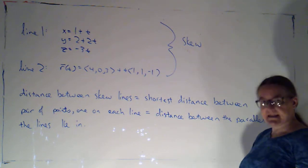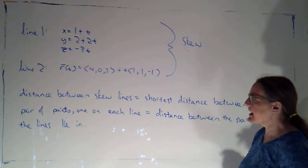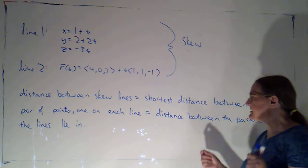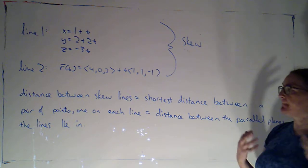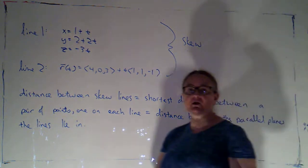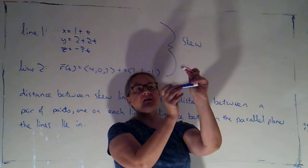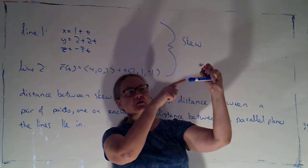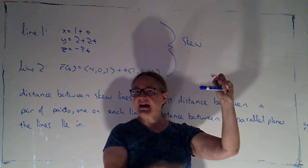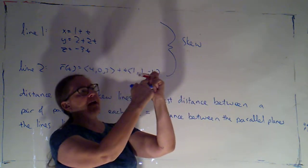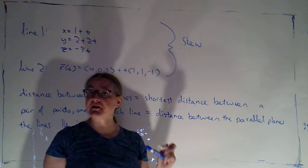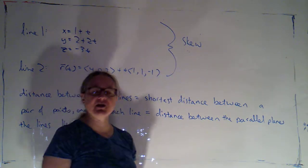If I want to find the distance between skew lines, by definition that's going to be the shortest of the distances between a pair of points, one on each line. So I wouldn't just pick a point on this line and a point on that line and calculate that distance — I'd look for the pair of points that are the closest together and calculate that.